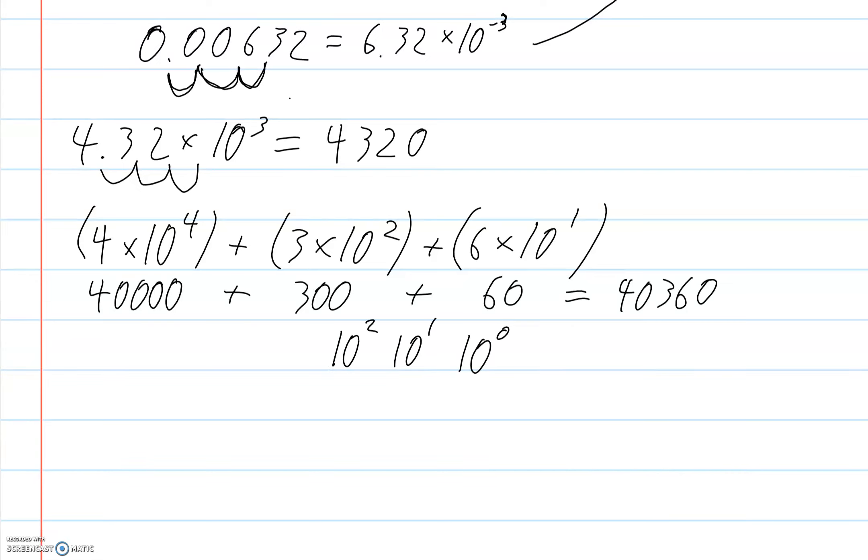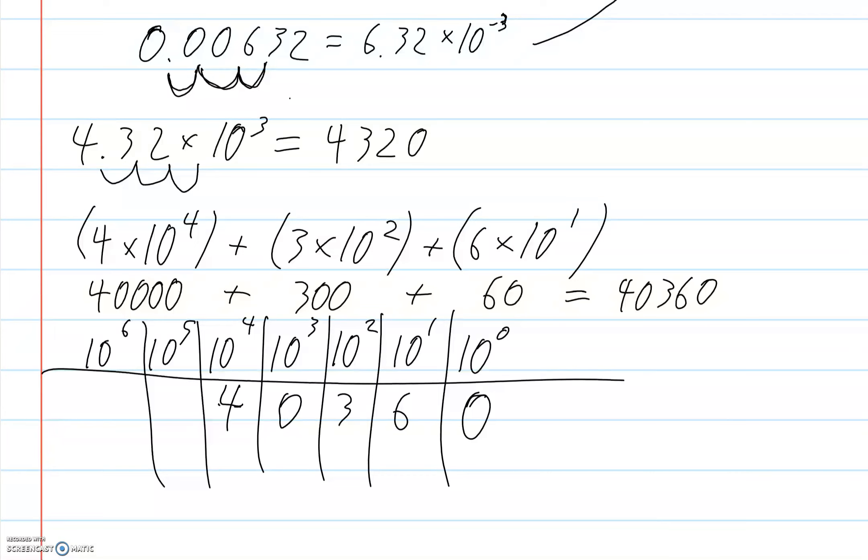10 to the 2, 10 to the 3, 10 to the 4, 10 to the 5, 10 to the 6. So if it asks you this question, you can look at 10 to the 0, are there any of those? No. So put a 0. Are there any 10 to the 1's? Well, yes, there was the 6. Are there any 10 to the 2's? Yes, there was the 3. Are there any 10 to the 3's? No. Put a 0. Are there any 10 to the 4's? Yes. Put that 4. Are there any 10 to the 5's or bigger? No. So we're going to ignore those.